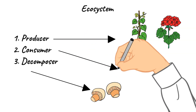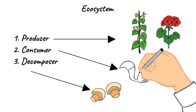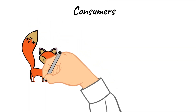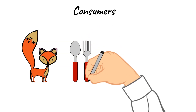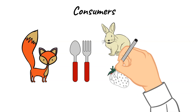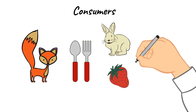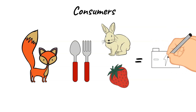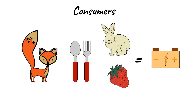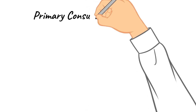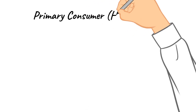Today, we're specifically going to talk about consumers. Animals, including humans, are all consumers. They eat or consume other animals and plants for their energy. They cannot produce their own energy, but they do need energy and use it. Within the category of consumers, there are three different types. Let's dive into those types now.